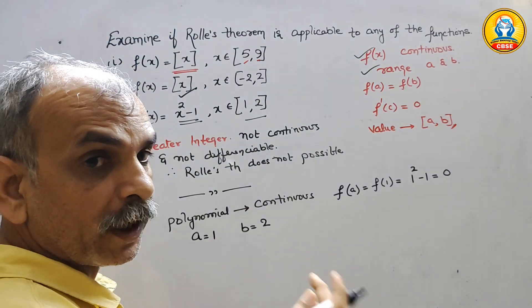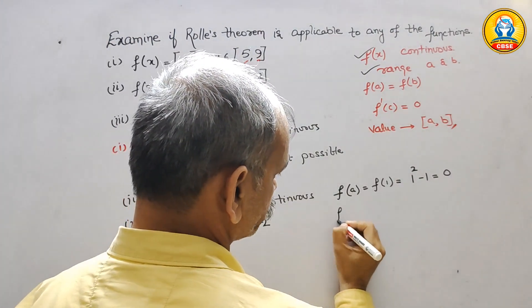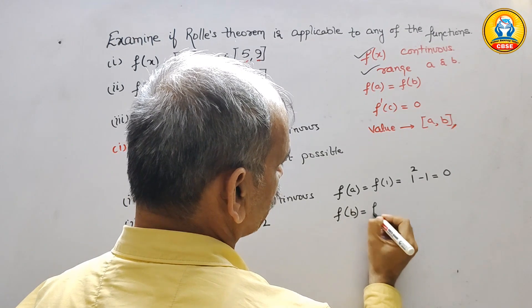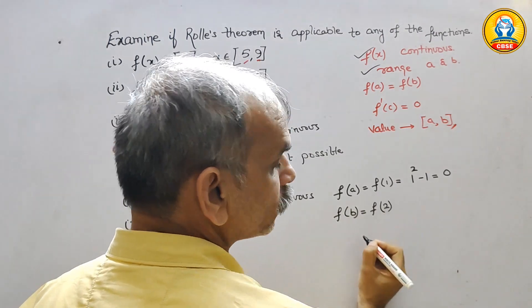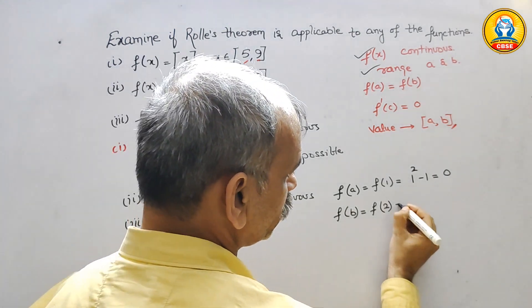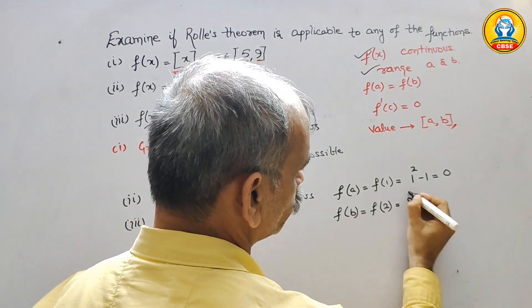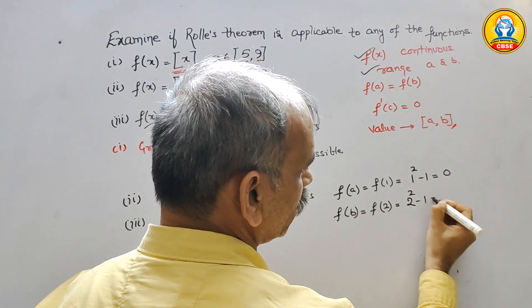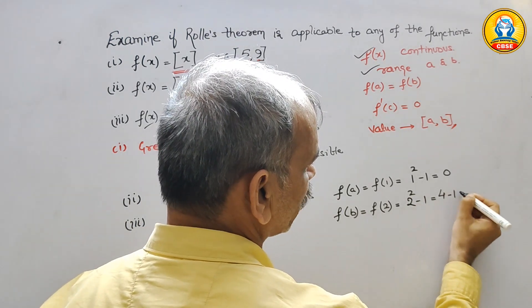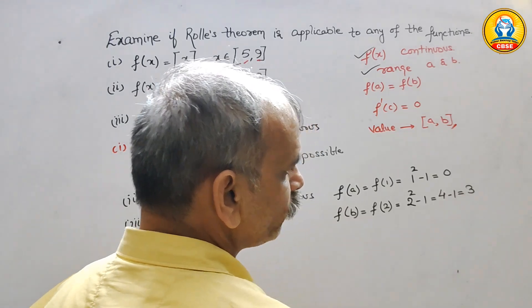Now, we have to go for F(B). F(B), that is nothing but function 2. That is equal to function 2. That is equal to 2 square minus 1. That is equal to 4 minus 1. That is equal to 3.